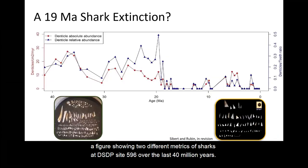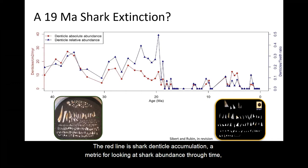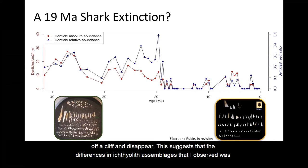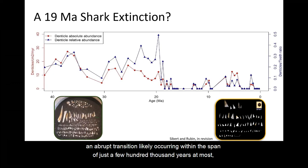This figure shows two different metrics of sharks at DSDP site 596 over the last 40 million years. The red line is shark denticle accumulation, a metric for looking at shark abundance through time, while the blue line is relative shark fossil abundance compared to fish tooth abundance in the same samples, a metric of community structure. Either way you slice it, there's a lot of sharks in the open ocean until about 19 million years ago, when shark populations effectively fall off a cliff and disappear. This suggests that the differences in ichthyolith assemblages that I observed was an abrupt transition likely occurring within the span of just a few thousand to a few hundred thousand years at most — a geologic instant in time.